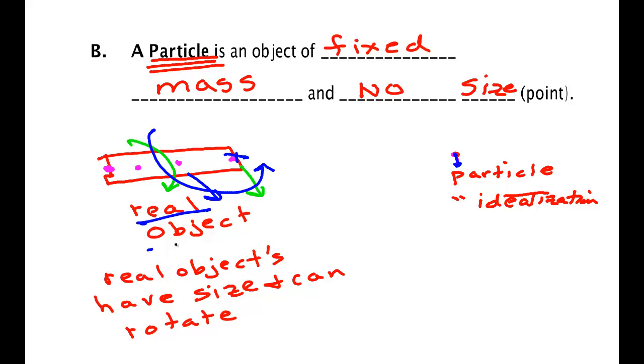These are real objects. These are idealizations of mathematics. We will eventually get to real objects when we get through all the chapters, but for now we're going to only consider particles.